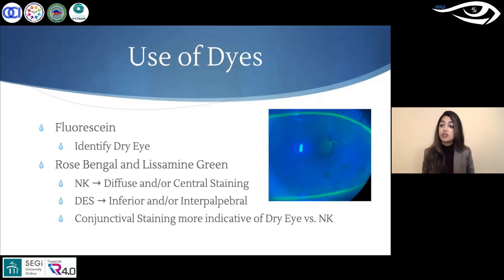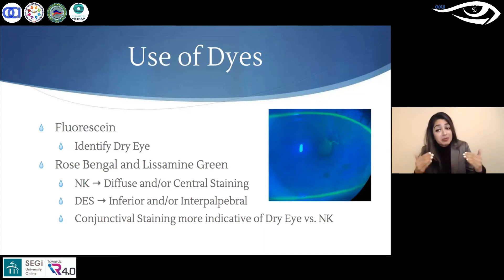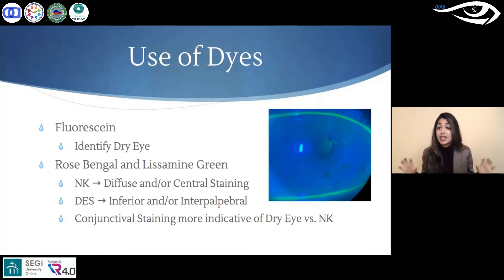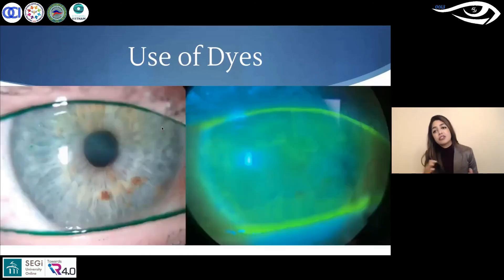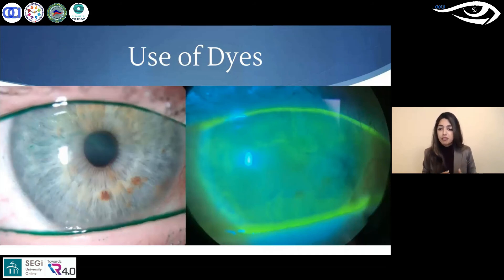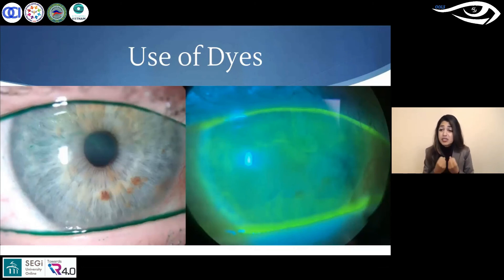I encourage you all to also use either rose bengal or lysamine green. The helpful role of these dyes — while they can be slightly more toxic — is that they help you identify desiccated cells. You'll be surprised how much lysamine green staining you can pick up on the cornea and conjunctiva. The quality and location of staining is very important to document. I traditionally use lysamine green only, because I find it's less toxic and better tolerated compared to rose bengal — especially if the patient already has concurrent ocular surface disease and is very sensitive, as the burning effect from rose bengal can throw off my assessments.